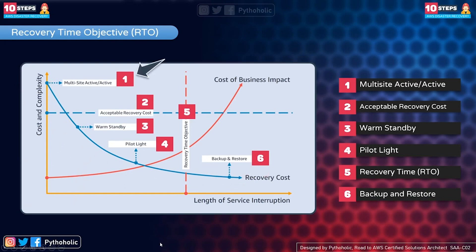The first strategy is multi-site active-active, where you create a second active replica of your service. It offers the best recovery time, but the cost exceeds acceptable limits for most businesses. The next best approach considering time is warm standby, where you have a scaled-down version of a fully functional environment always running in the cloud — optimal for disaster recovery and reasonable on cost.